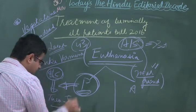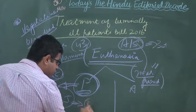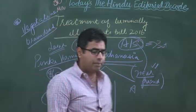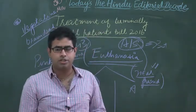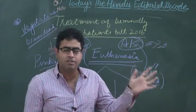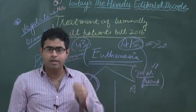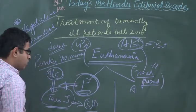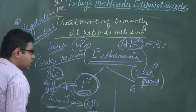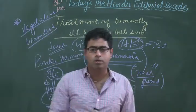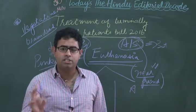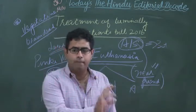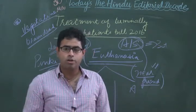These two judges will set up a committee of three doctors. The three doctors, after examining and analyzing the state of the terminally ill or vegetative state patient, will file a report to the judges of the High Court. This report is sent to the Chief Justice of the particular High Court, and only after that is a decision taken on whether passive euthanasia should be carried out in that particular case.